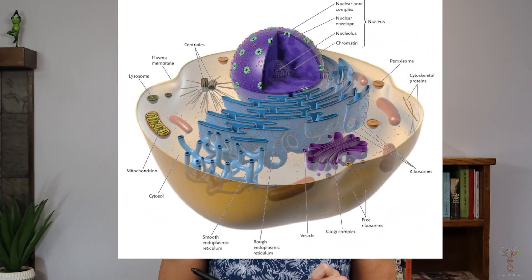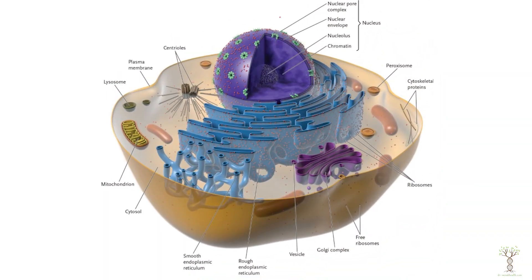Where does this occur? In the cell, the nucleus contains the DNA and the chromatin, and transcription occurs in the nucleus. Then the messenger RNA molecule leaves through a pore and goes to find a ribosome. That ribosome can be free in the cytoplasm or it can be on the rough endoplasmic reticulum.